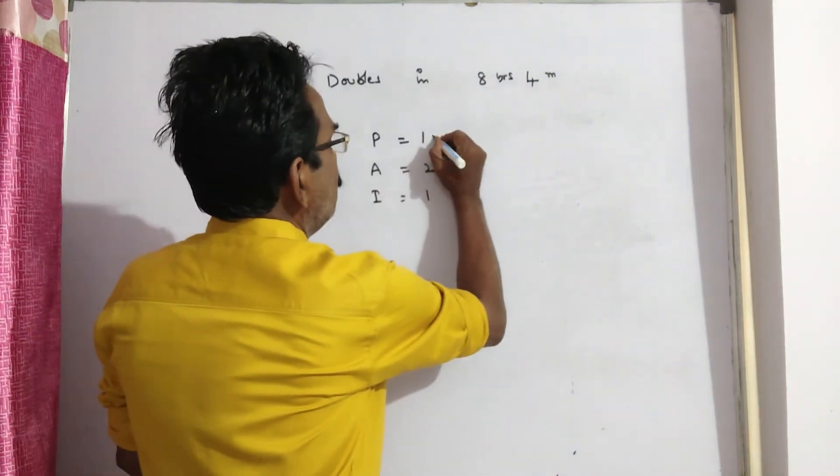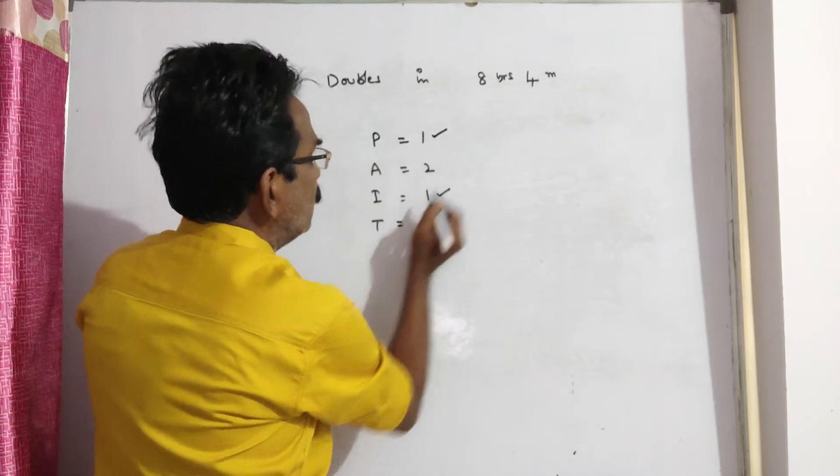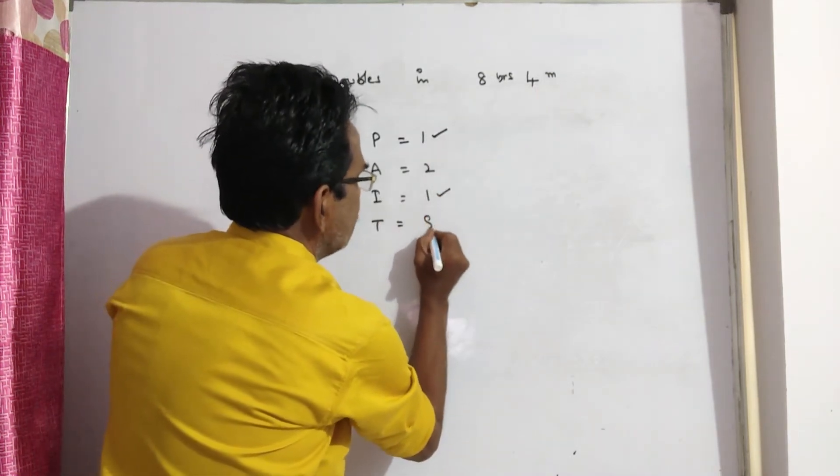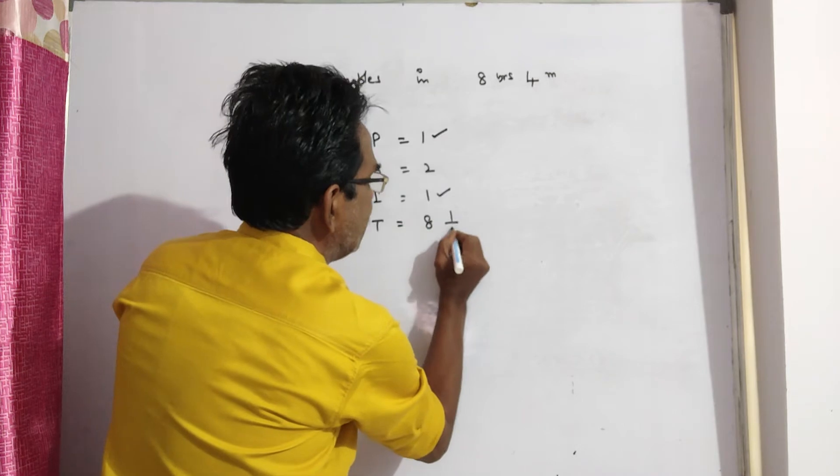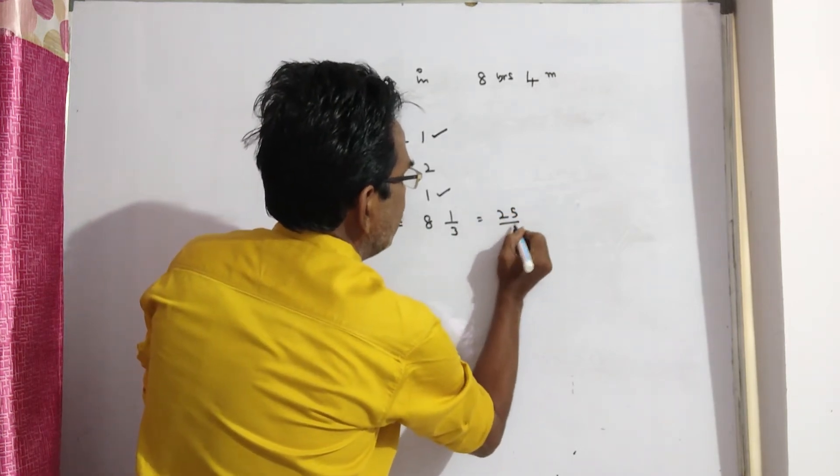So now P is equal to 1, I is equal to 1, T is equal to 8 years 4 months, that is 8 and 1/3 year, that is equal to 25/3, yes.